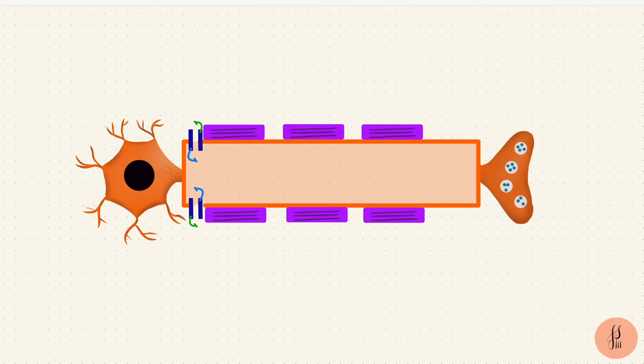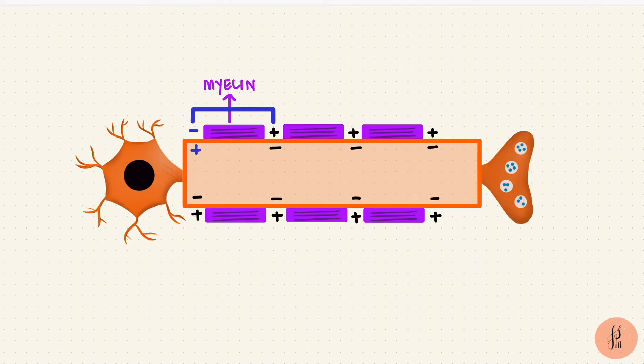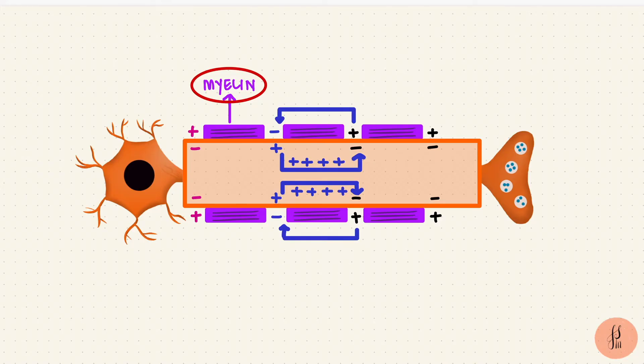In myelinated nerves, they also accumulate at the nodes of Ranvier. Myelin increases the membrane resistance and lowers the membrane capacitance. So the current flows through the extracellular fluid outside the myelin sheath and through the axoplasm, along the paths of least resistance. Again there are circular currents, but here the areas that are myelinated, they don't generate action potentials. Myelin increases the membrane resistance, so instead current flows through the axoplasm and at the next node there is generation of another action potential.